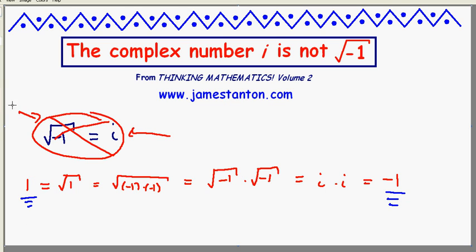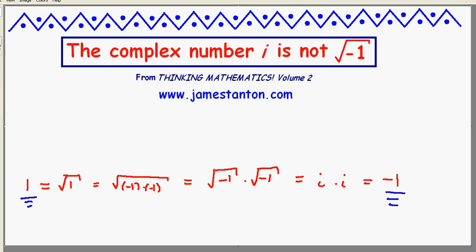Well, the problem is the definition of i has to be as follows. i is a number with the property that i squared is negative 1. That's the definition. From that, it follows that the square root of negative 1 is actually two possible values, plus or minus i.